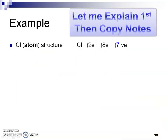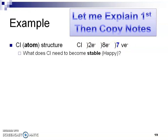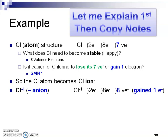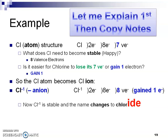Listen first, then pause and copy. Here's our chlorine atom: two on the first energy level, eight on the second, seven on the third. Same question — what does chlorine need to be stable? Eight valence electrons. Which is easier: losing seven or gaining one? It's easier to gain one, so the chlorine atom becomes chloride — an anion, a negative ion. The two and the eight core electrons stay the same, but instead of seven, it now has eight valence electrons.